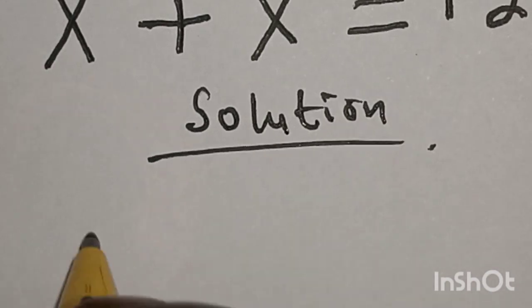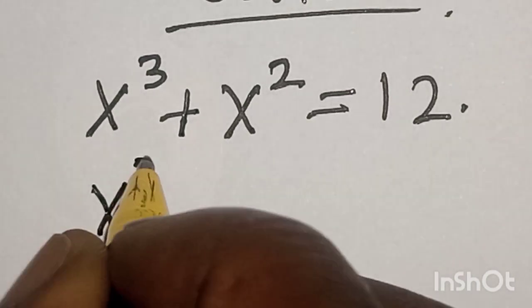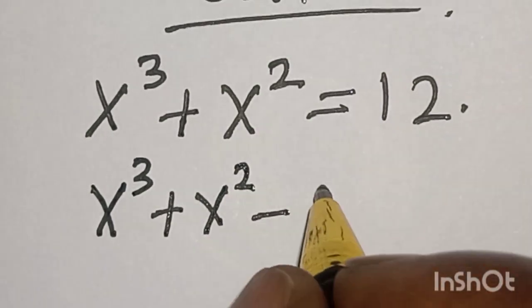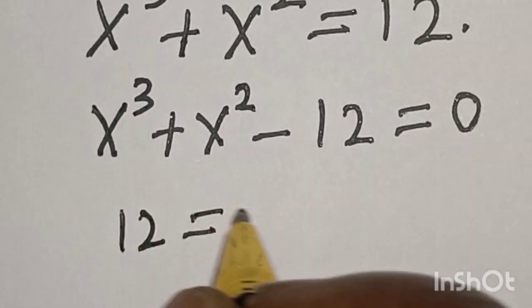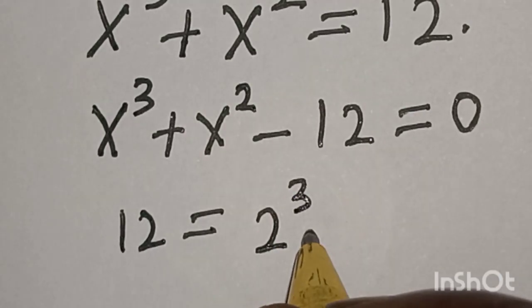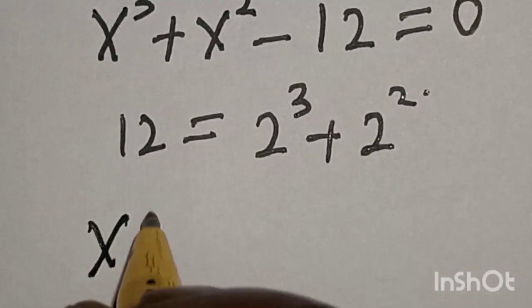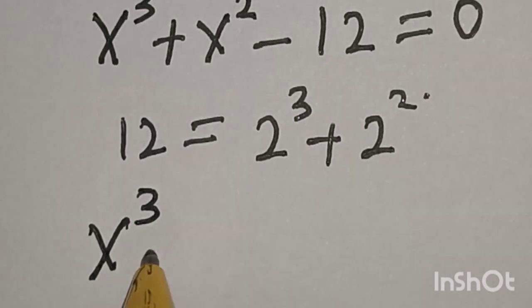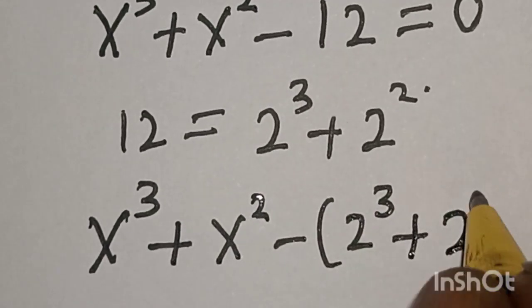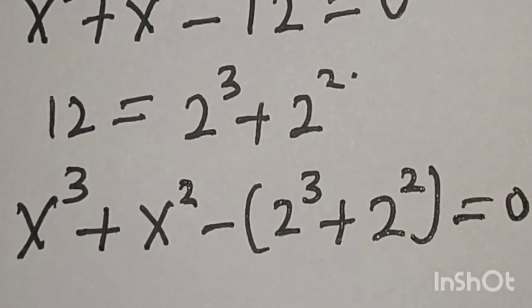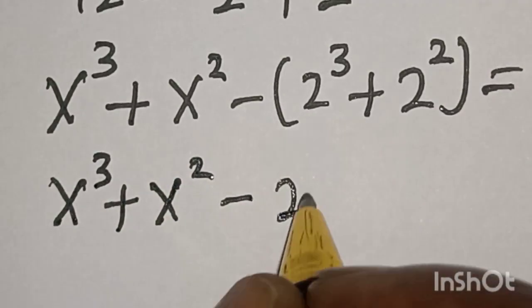We have the given equation: s³ + s² = 12, which gives us s³ + s² - 12 = 0. Now, 12 is the same as 2³ + 2² = 8 + 4. So we rewrite as s³ + s² minus (2³ + 2²) is equal to 0.